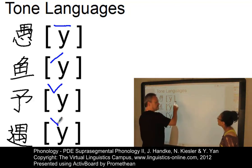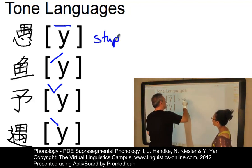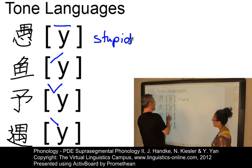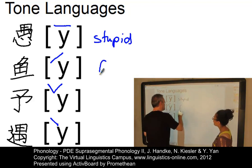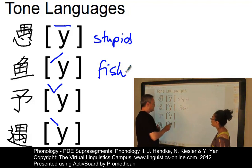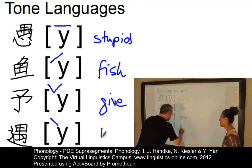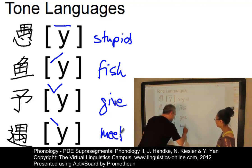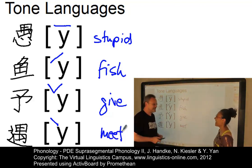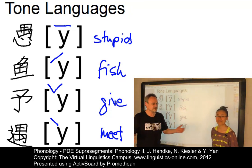Now we only have to know what they mean. The first one — with a level tone — means 'stupid'. The next one — with a rise — means 'fish'. With a fall-rise it means 'give'. And finally with a falling tone it means 'meet'. Well, Yuxi, it's been wonderful to meet you. Thank you for your wonderful demonstration of Chinese — now you should have an idea about tone in a tone language.